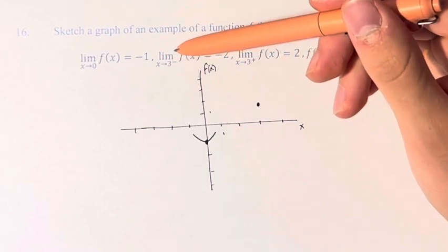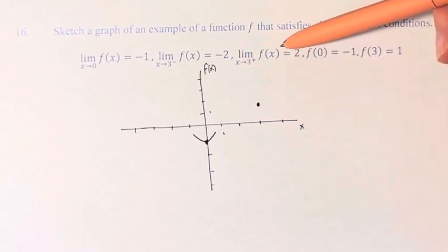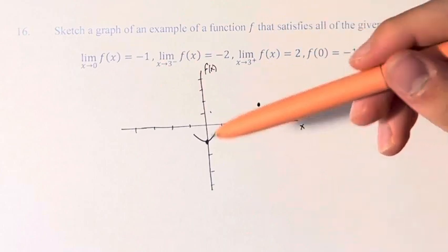As x approaches 3 from the left and the right, the function is equal to 2. Or sorry, the function's value approaches 2, rather.